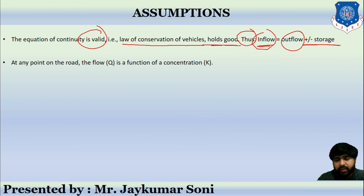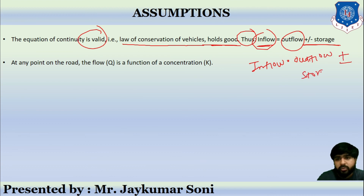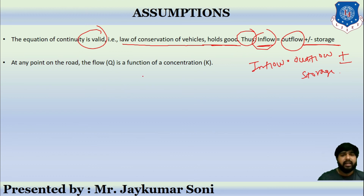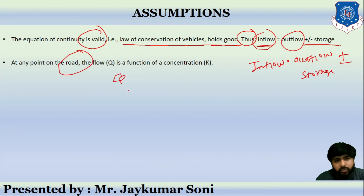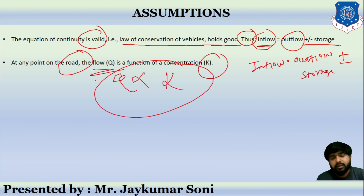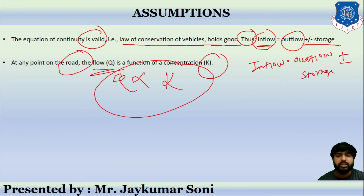The second assumption is that at any point on the road, flow Q is a function of concentration K. These are the two key assumptions of the theory. The equations will be covered in the next session. Thank you.